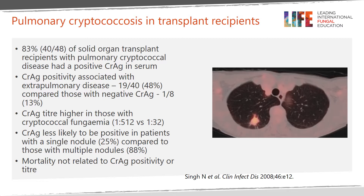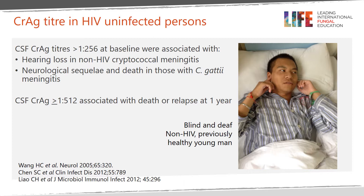Median CRAG titer in patients who died was 1 to 256 compared to 1 to 64 in those who survived. In HIV-uninfected people with cryptococcal meningitis, high CSF CRAG titer at baseline is associated with sensorineural hearing loss, neurologic sequelae, cryptococcal meningitis relapse, and death.